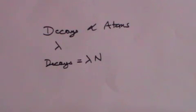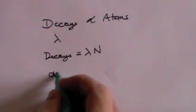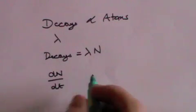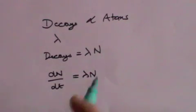Now the number of decays per second is essentially the rate of change of the number of atoms with time, or dN by dt. And that equals lambda N. We put a minus term in here because the rate of change is decreasing.